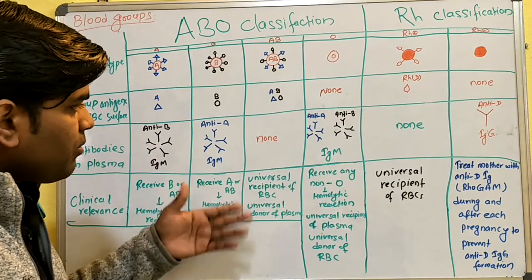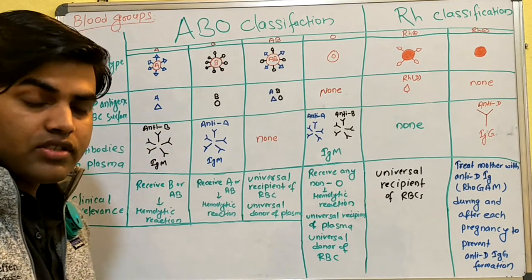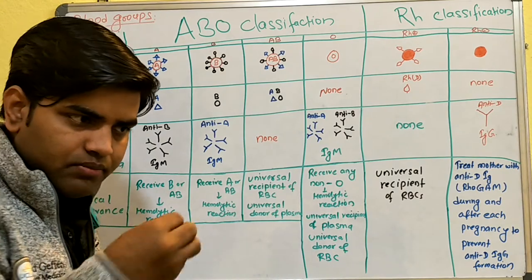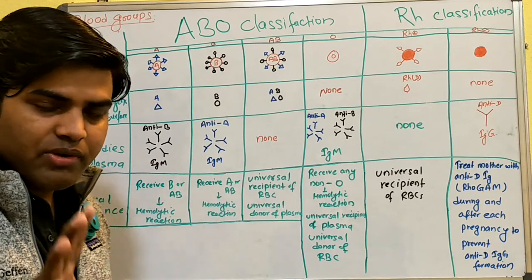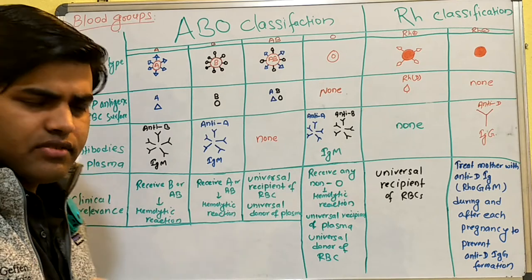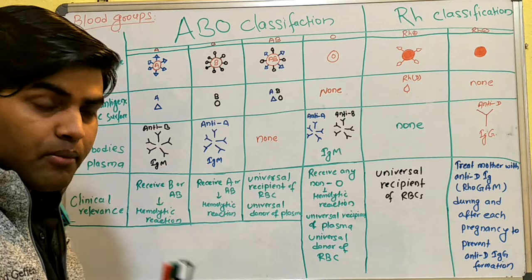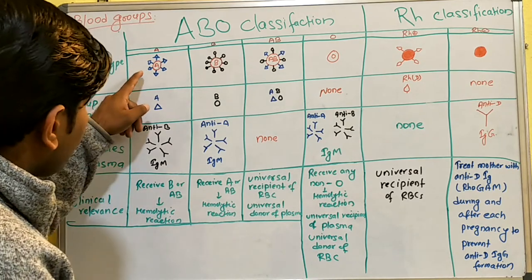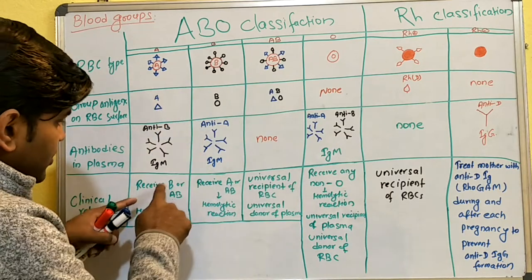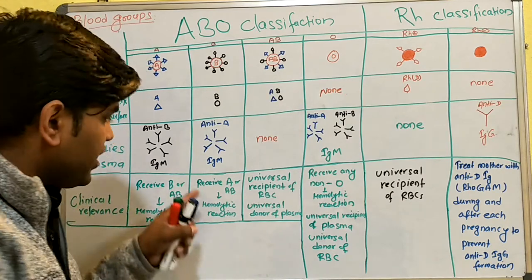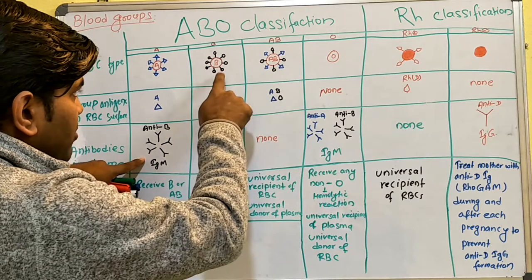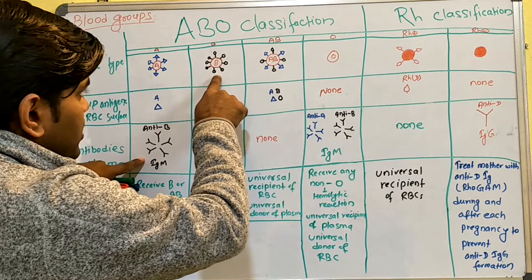Now, what is the problem if a patient is blood group A and by mistake you give them blood group B or AB? This should not happen today because blood banks and lab support can easily determine blood groups, but let's understand the consequence. Suppose a blood group A patient receives blood group B or AB — what will happen?